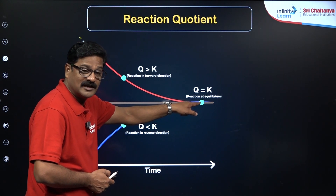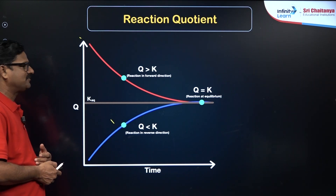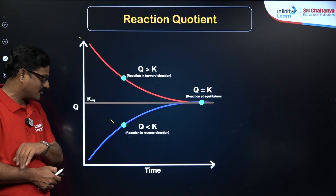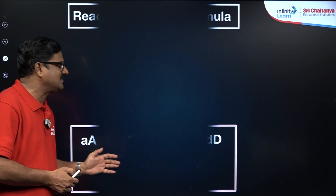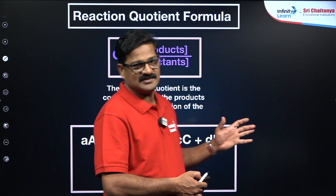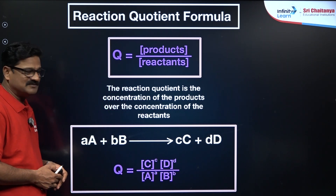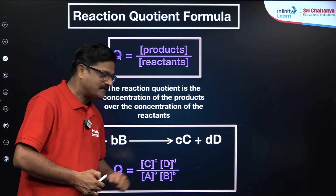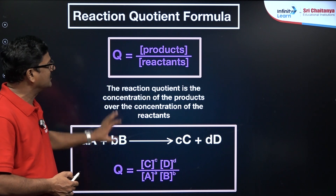If K value is greater than Q, equilibrium favors the forward direction. If Q value is greater than K, equilibrium is favored in the backward direction. This graph illustrates how QC and KC are related. For the general reaction: aA + bB ⇌ cC + dD, the reaction quotient QC equals [C]^c × [D]^d divided by [A]^a × [B]^b. This Q value gives insight into how forward and backward reactions are predicted.